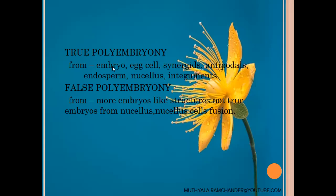Later we will discuss in detail how embryos develop from another embryo or from egg cells. To summarize: in true polyembryony, multiple embryos are developed from the embryo, egg cells, synergids, antipodals, endosperm, nucellus, or integuments — and if these parts develop into embryos, it is called true polyembryony.